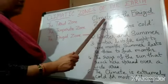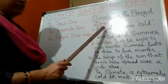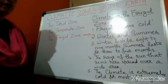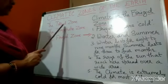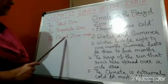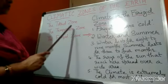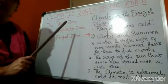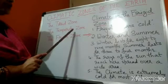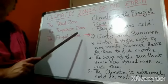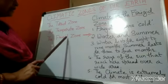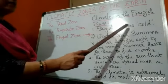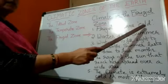The climate in the frigid zone. Frigid means very cold. We have three zones: torrid, temperate, and frigid zone. In the torrid zone it is very hot, in the temperate zone it is moderate or mild, and in the frigid zone it is very cold.